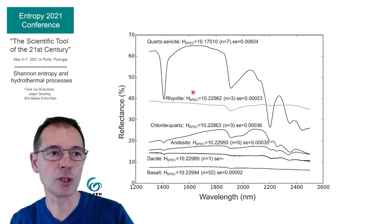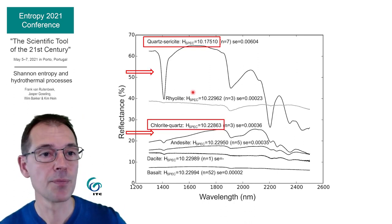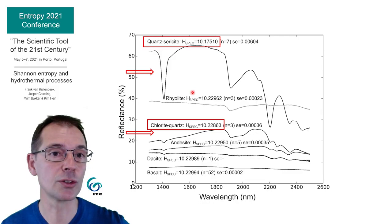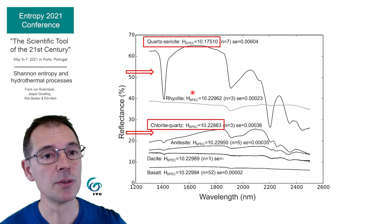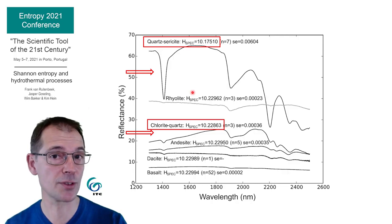This figure shows why the infrared reflectance spectra of hydrothermally altered rocks produce low spectral Shannon entropy values. The two mean spectra of the quartz-sericite altered rocks and the chlorite-quartz altered rocks shown here have deeper absorption features — the troughs in the curves — than those of the unaltered rocks. Deep and few absorption features result in low entropy values. The absorption of infrared radiation at narrow wavelength ranges causes molecular vibrations at restricted wavelengths, and therefore at restricted frequencies. This is important to remember.